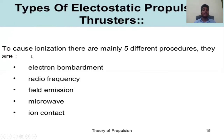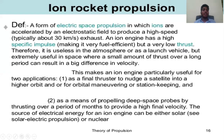Types of electrostatic propulsion: to cause ionization there are mainly five different processes — electron bombardment, radio frequency, field emission, microwave, and ion contact. Ion rocket propulsion is a form of electrostatic propulsion in which ions are accelerated by an electrostatic field to produce a high-speed exhaust, typically about 30 kilometers per second. An ion engine has a high specific impulse making it very efficient but a very low thrust, so it is not useful in the atmosphere or as a launch vehicle.